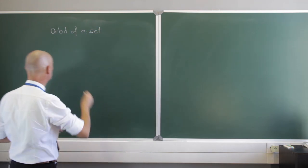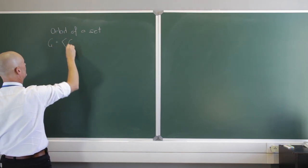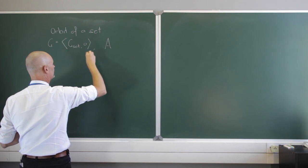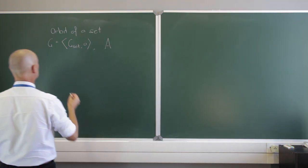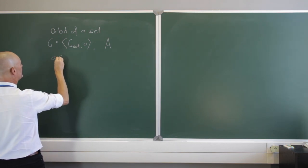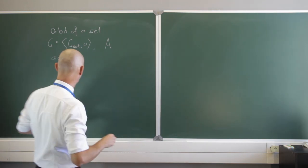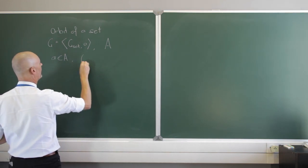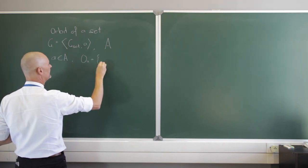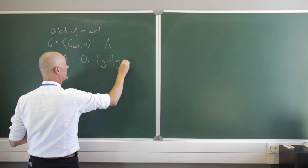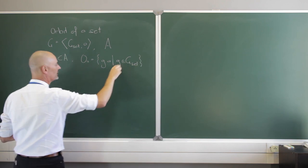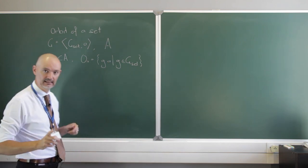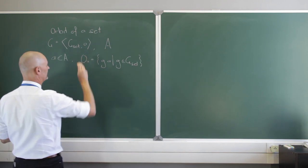We're going to imagine that we have a group G with a set — I like writing that as G-set — and some group action. We have a set A, just a set of elements. We take a specific element a of A and we allow all the elements in G-set to act upon this a. That gives us the orbit of a, defined as the set {G·a such that G is an element of G-set}.